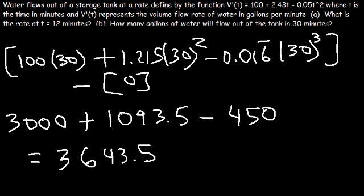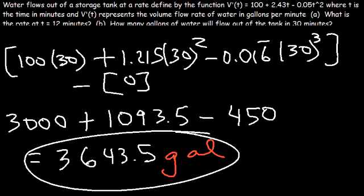Now the unit that corresponds to this problem is gallons. If v'(t) is in gallons per minute, v is going to be in gallons. So that's how many gallons is going to flow out of the tank in the first 30 minutes.